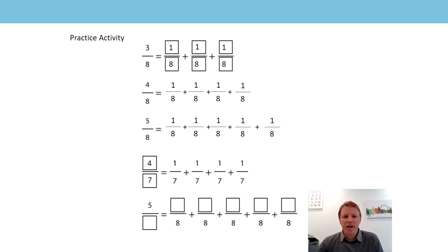And then finally, there are lots of missing boxes — we could start at either part. We could start at the denominator. We have the denominator as eight, which means in my fraction it must be five eighths. And if my numerator is five, that means there'll be five one-eighths.